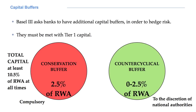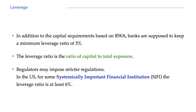In reality, during a crisis, banks can decrease to 8%, but then they are obliged to bring capital back as soon as possible. In addition to the capital requirements based on risk-weighted assets, according to Basel 3, banks are supposed to maintain a minimum leverage ratio of 3%. The leverage ratio is the ratio of capital to total exposure, and it can be seen as a measure of the riskiness of a bank. In the Basel 3 framework, national regulators may impose stricter regulations. In the US, for example, for some systemically important financial institutions, the leverage ratio is at least 6%. A systemically important financial institution is any financial institution whose failure may trigger a financial crisis. They are also known as too big to fail and too interconnected to fail.